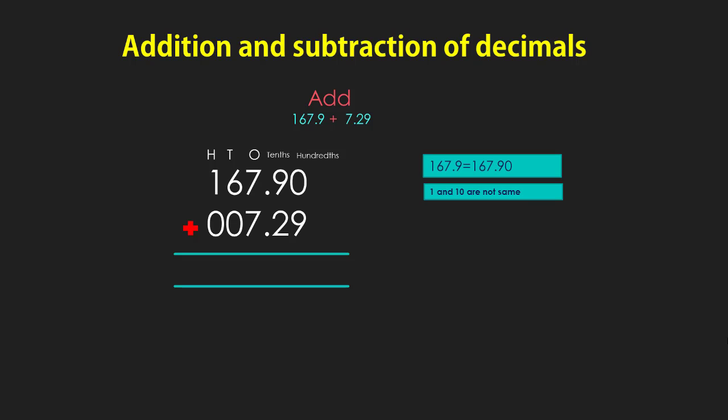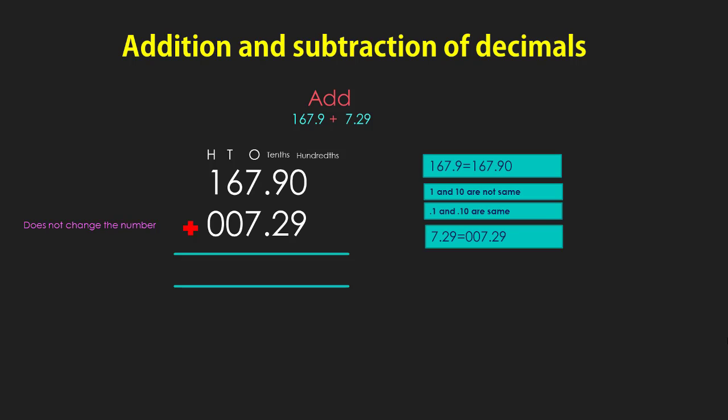1 and 10 are not the same, but only in the case of decimal numbers, 0.1 and 0.10 are the same. So we put 167.90 instead of 167.9 — it does not change the number. Pulling a zero to the right of a decimal place does not change the number. We also put 007.29 instead of 7.29 — it does not change the number.